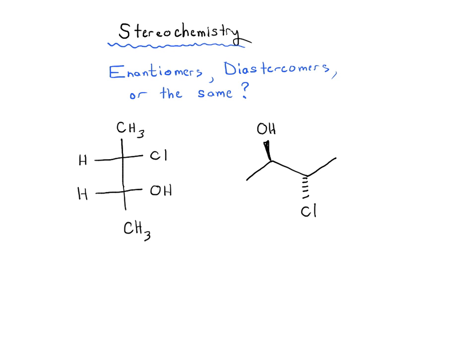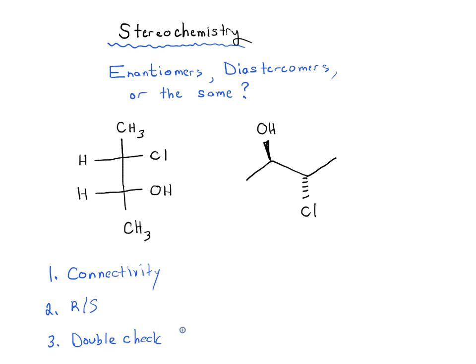An example like this is one of the reasons why doing bond rotations to figure out whether two molecules are superimposable or not is a real pain. So instead of doing it that way, let's use the method we've been talking about: first look at the connectivity, then calculate the R/S, and then double-check for symmetry, which we don't need to do 95% of the time but it does still come up.